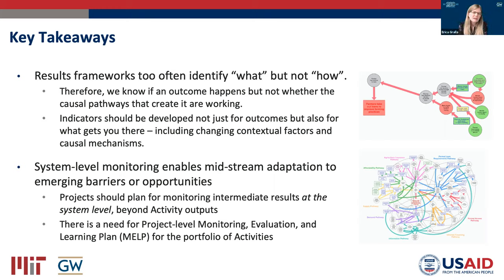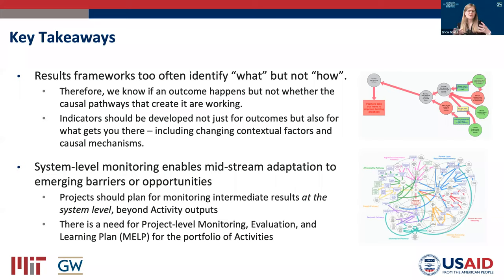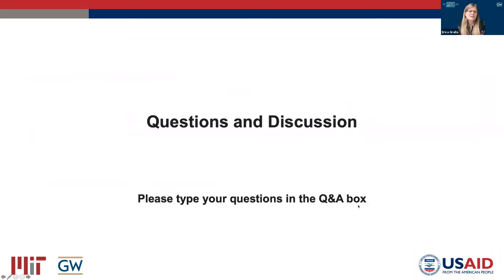The second takeaway is that monitoring at the system level — this big picture level — is important for adapting interventions to emerging barriers or opportunities midstream. It seems like a good idea for projects to plan to monitor intermediate results at the system level across multiple activities or across a portfolio of activities, using problems to learn how to do better research by engaging in practical problems and also learning how to do practice better by building knowledge from research.